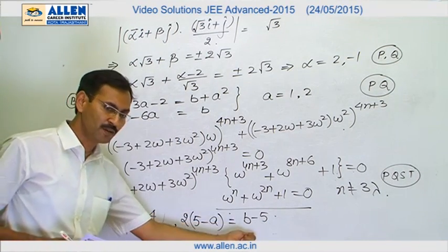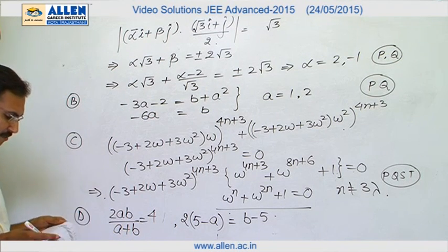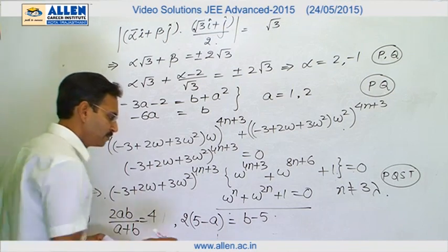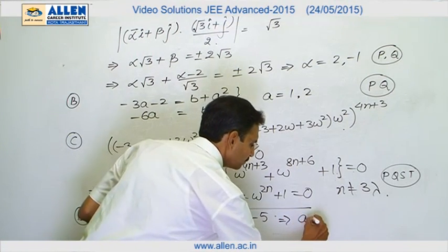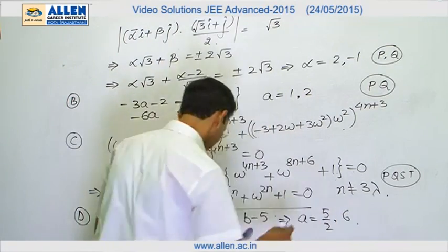I will replace the value of b from here in this relation. I will have a quadratic in a and that quadratic will give me the values of a. The values of a come to be 5 by 2 and 6. I already solved it for you.